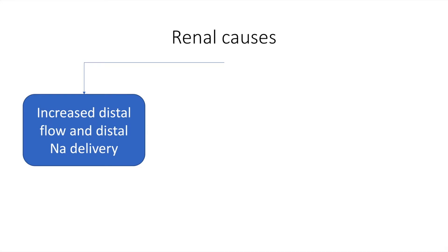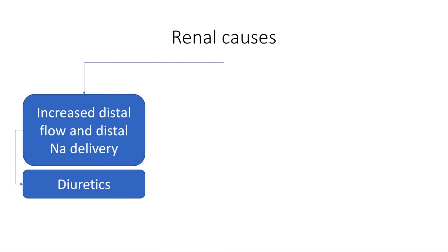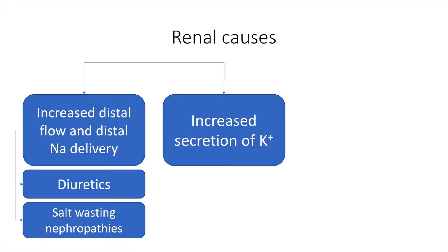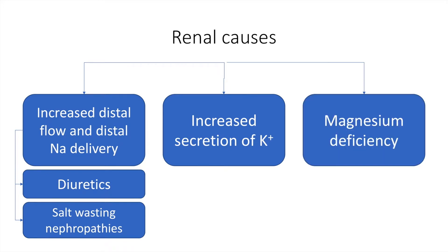The most important renal cause is increased distal flow and distal sodium delivery, which can occur because of diuretics. Many patients on diuretics may develop hypokalemia, and diuretics must always be considered as a prime cause. Salt-wasting nephropathies are relatively rare in clinical practice. Increased secretion of potassium can also cause hypokalemia, and magnesium deficiency — which has treatment implications — is relevant here as well.